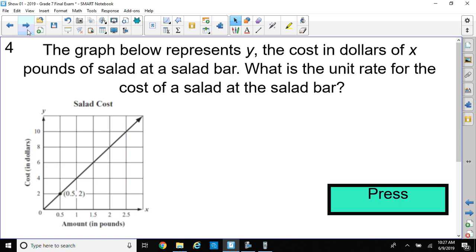Here's our last question for today. The graph below represents Y, the cost in dollars, of X pounds of salad at a salad bar. What is the unit rate for the cost of a salad at the salad bar? When you remember, back in 6th grade, they called unit rate the cost of one item. So, when you're buying one item or one pound, in this case, of salad, that would be what the cost of that one pound is what we're looking for.